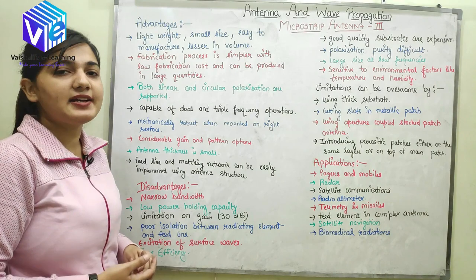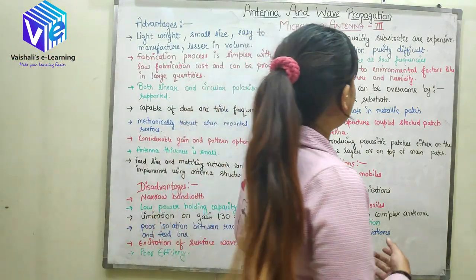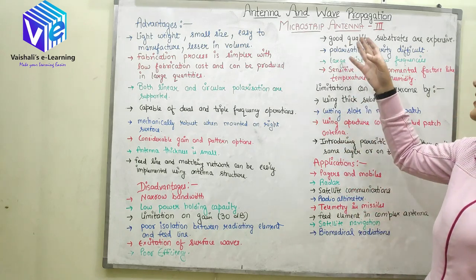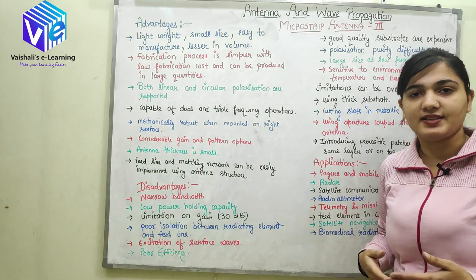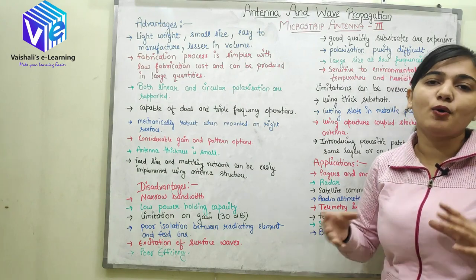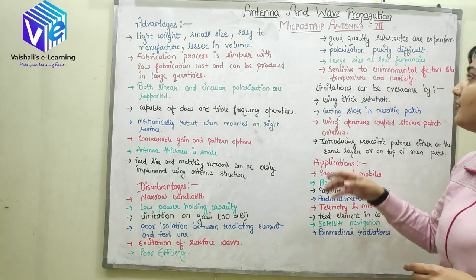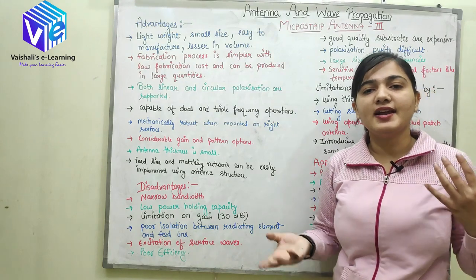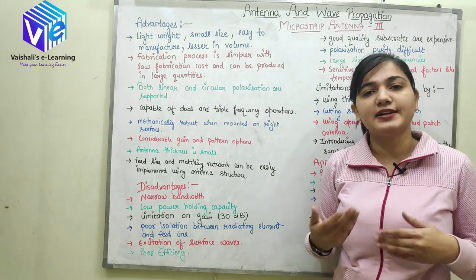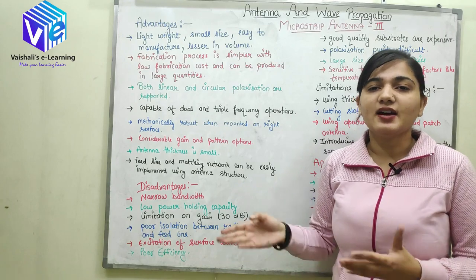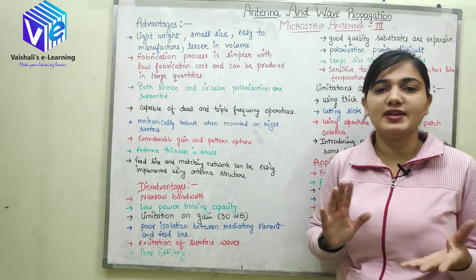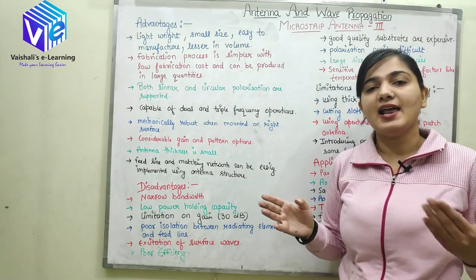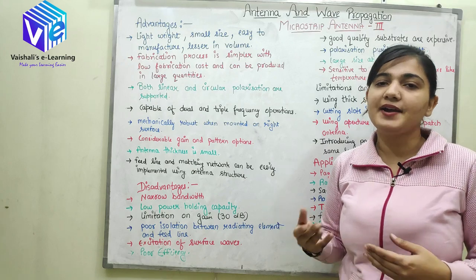The next disadvantage is that it has poor efficiency. Another disadvantage is that it requires good quality substrates which are expensive, making the whole antenna structure very expensive. The next disadvantage is that polarization purity is difficult — linear and circular polarized waves get intermixed and you don't get a single polarized wave. If you want a linearly polarized wave, you will get circularly polarized waves in between, and vice versa.